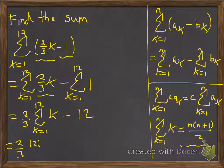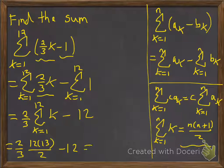2/3, and then applying our formula here where n is 12, so it's going to be 12 times 12 plus 1, which is 13, divided by 2 minus 12, and then if you crunch those numbers that's going to give us 78 there.